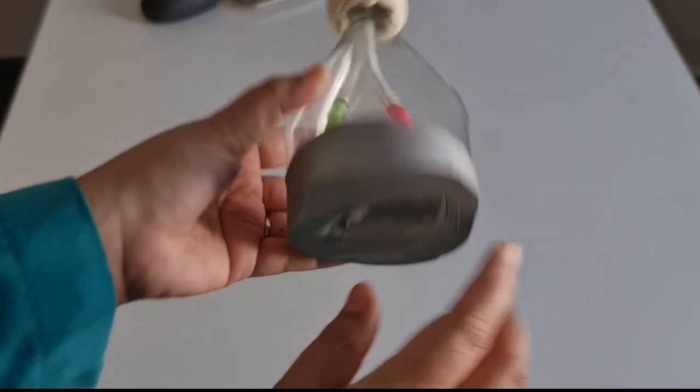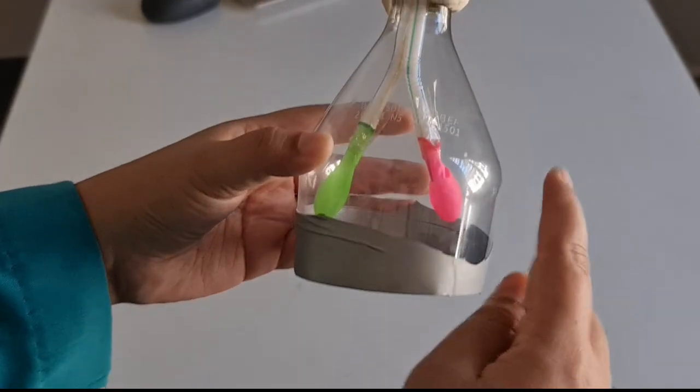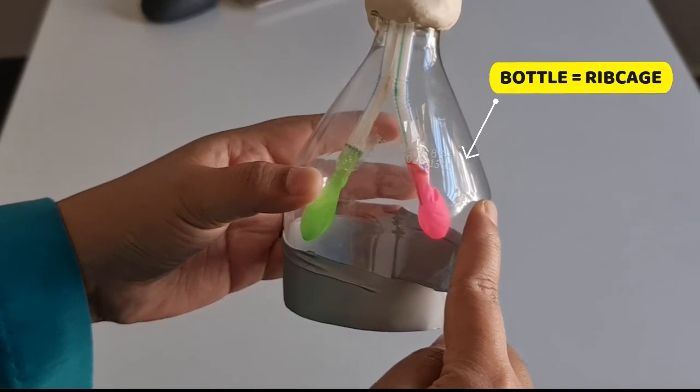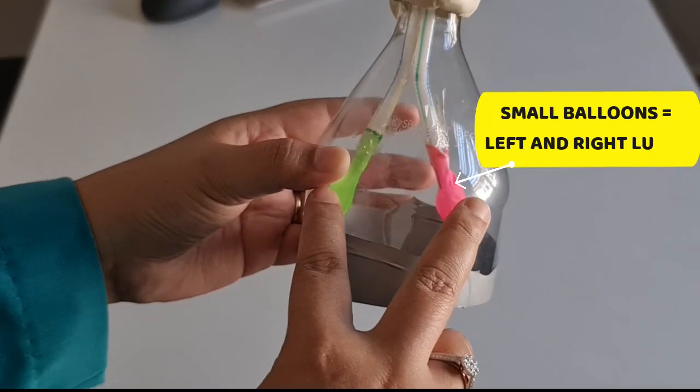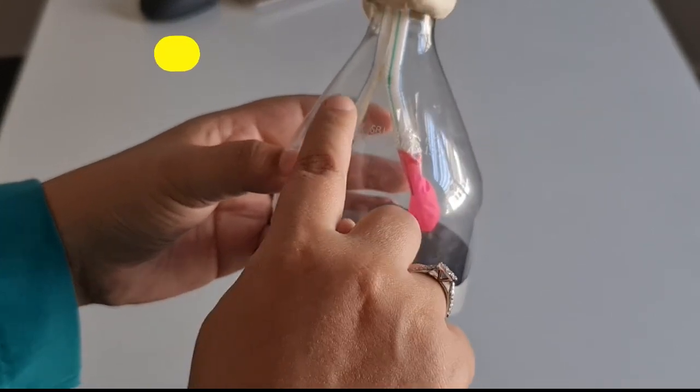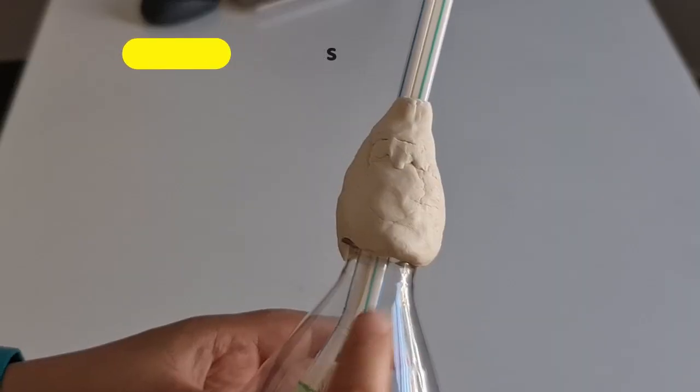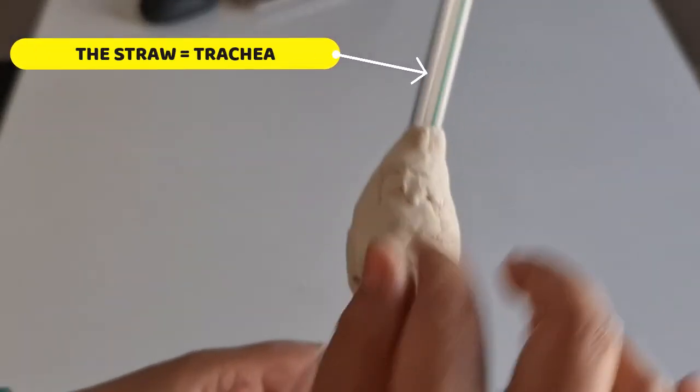In this model, you can see the grey balloon here represents a diaphragm. Meanwhile, the bottle here represents the rib cage. The two balloons inside represents the lungs, the left and the right lungs. Meanwhile, the branches of the straw it said there are the bronchioles and the tube that going outwards is the trachea.